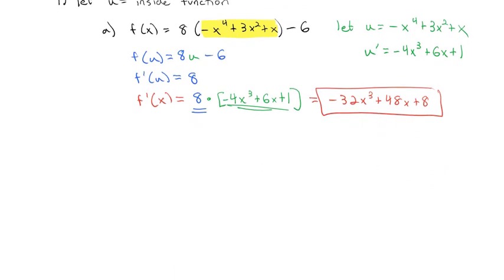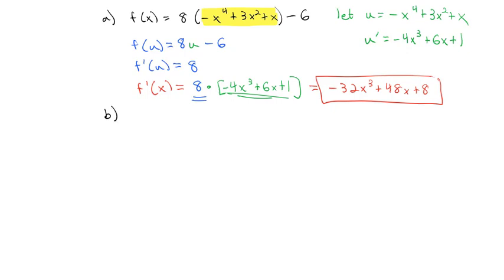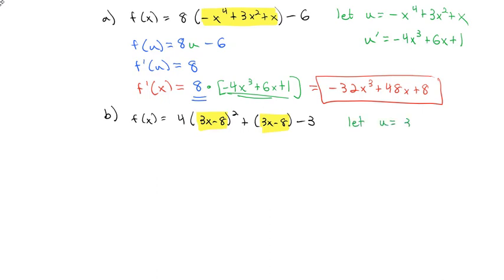Let's look at another example where we do that exact same thing. Let's say f of x equals 4 times (3x minus 8) squared plus (3x minus 8) minus 3. What we notice again is we've got this group, 3x minus 8, sitting inside it. So that's what we're going to let u equal: 3x minus 8. Then our function becomes a function in terms of u — it becomes 4u squared plus u minus 3, because each of those u's really just represents the 3x minus 8.